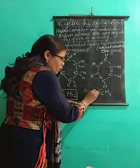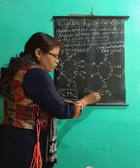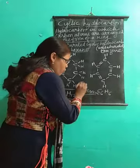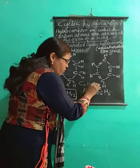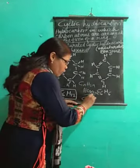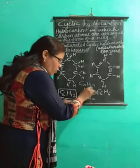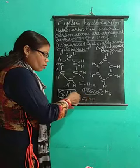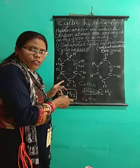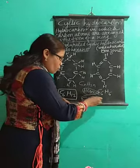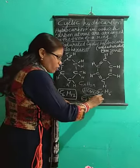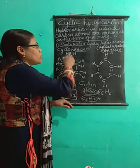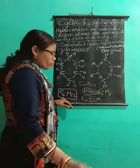Now you can see one more thing: if you say hexane, what is the molecular formula of hexane? The general formula is CnH2n, so it will be C6H12. So you can see that though it is hexane, it has the same molecular formula as cyclohexane, but the structure is different. When it is a straight chain it is hexane, but when it has a ring arrangement it is cyclohexane.